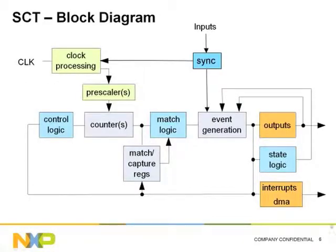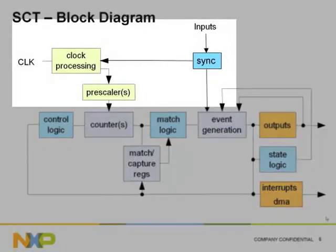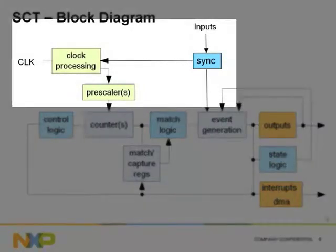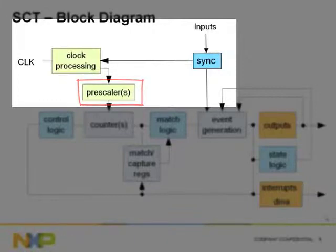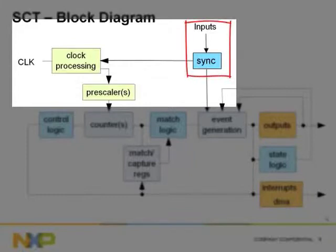This diagram shows the SCT in its major components. There is a section dedicated to the clock inputs, which includes two pre-scale registers, one for each timer half. This can be used to reduce the clock rate at which the SCT timer runs. The SCT also has an option for using an external clock source for the counters.